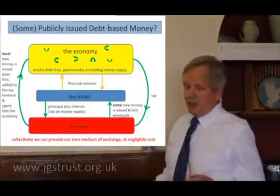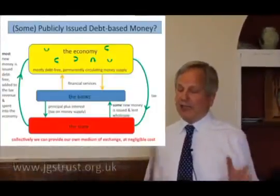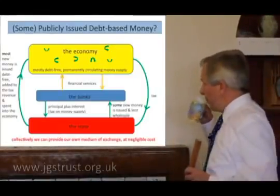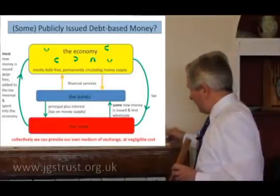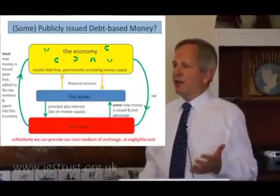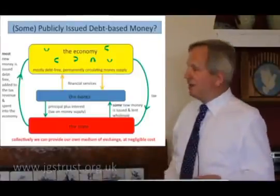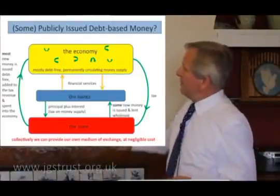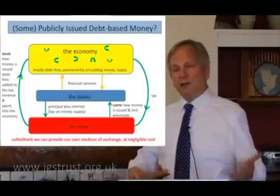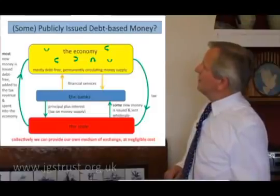Let's not knock debt-based money per se — we're just knocking commercially issued debt-based money. There is an argument that any money system needs to be a bit flexible, needs to expand and contract. If somebody invents a new widget and suddenly lots of factories are needed, we need a bit more money in the economy. We can still do that — collectively, through the state, we can lend money into the economy as well as spend money into the economy. So it's not a problem.